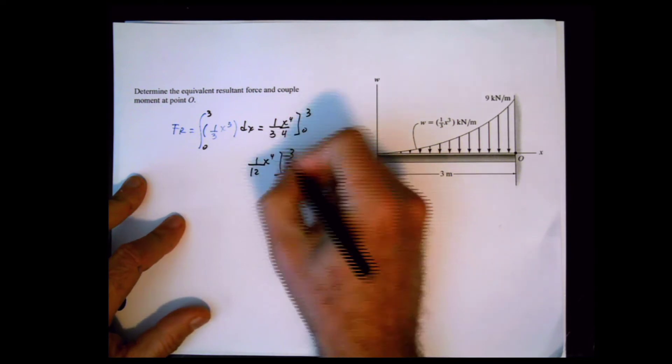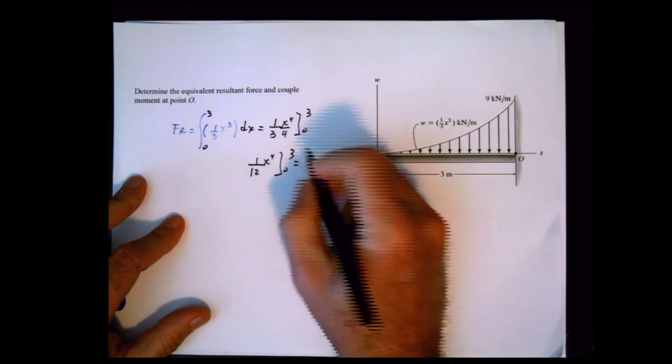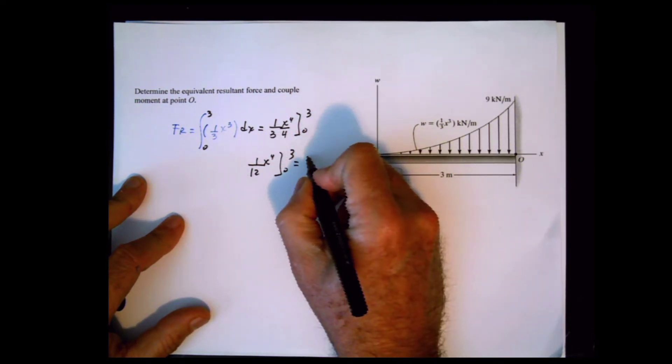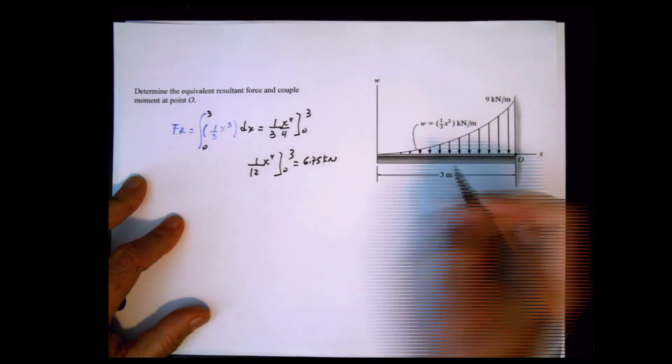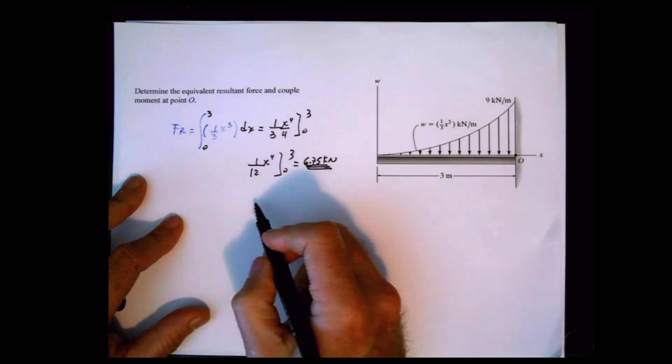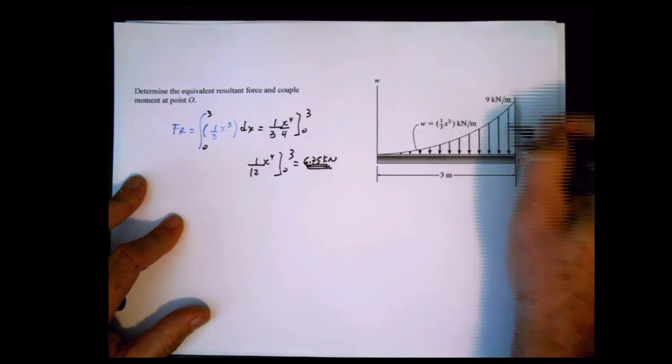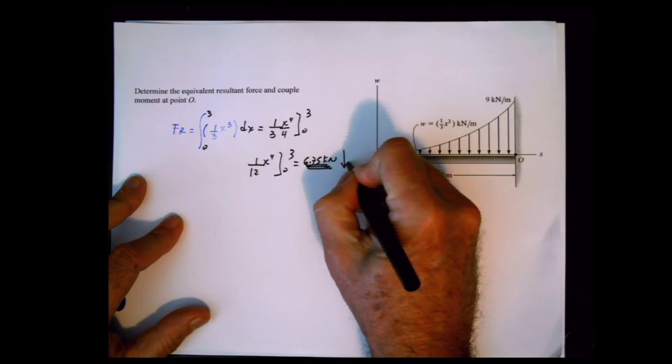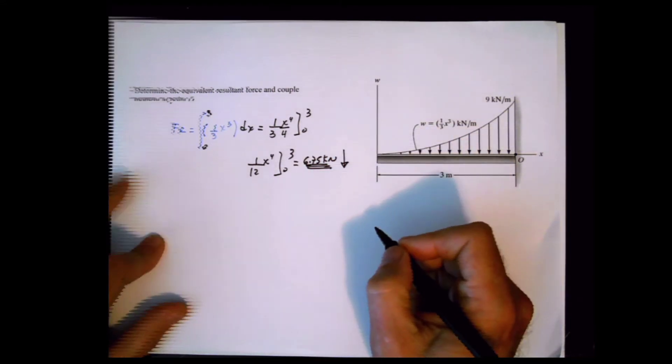When you evaluate this, you get 6.75 kilonewtons. Keep in mind I didn't put any sign in the equation, but because the loads are acting downward, the resultant force is also acting downward.